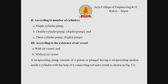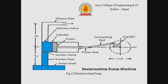A reciprocating pump consists of a piston or plunger having a reciprocating motion inside a cylinder with the help of a connecting rod or crank, as shown in Figure 1. The figure shows the complete parts and working of the reciprocating pump. The main parts include a suction pipe, delivery pipe, sump level, and suction valve.